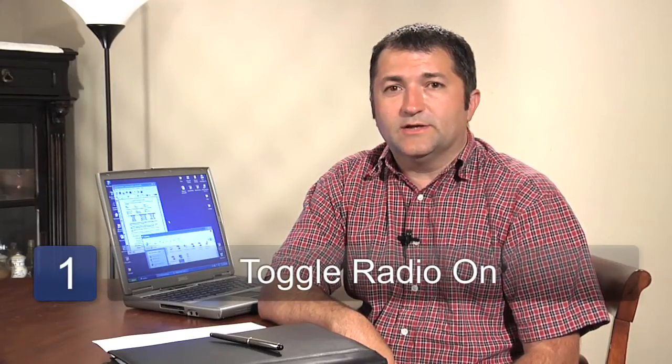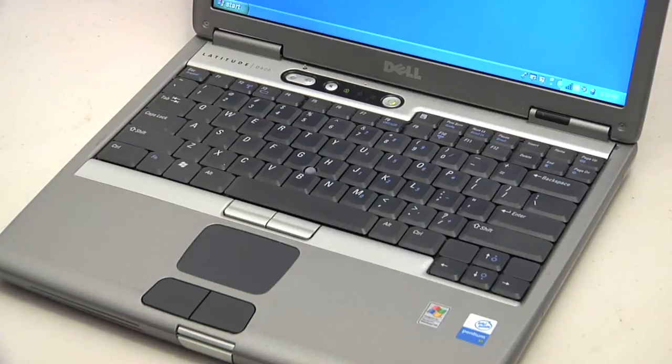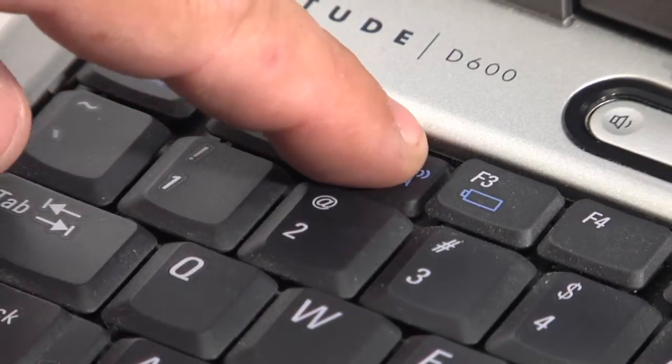In order to use the radio you'll need to toggle it on or off. You can do this by locating the hardware switch located somewhere on the top of your keyboard, on the side of your laptop, or by using a function key and a key that looks like a radio antenna.